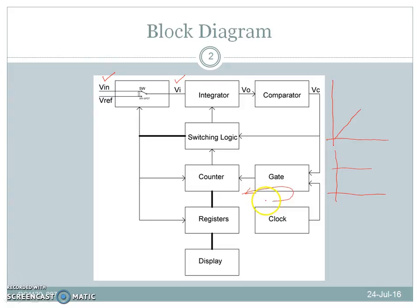The counters start counting from zero. After time t equal to capital T, the count and counter overflows and the switching logic switches the input of the integrator from Vin to Vref. At this time, the output of the integrator starts to fall from its value at t equal to capital T in the negative direction.